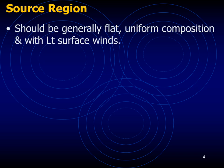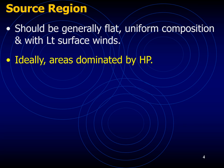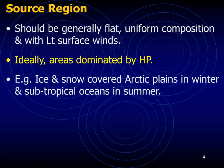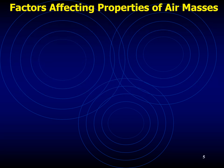Ideal source regions include the ice and snow-covered Arctic plains in winter and subtropical oceans in summer. The middle latitudes, where surface temperatures and moisture characteristics vary considerably, are not good source regions. Instead, this region is a transition zone where air masses with different physical properties move in, clash, and produce an exciting array of weather activity.